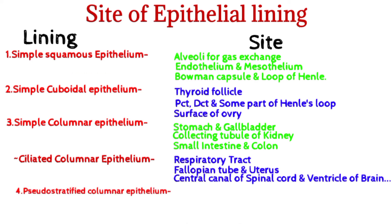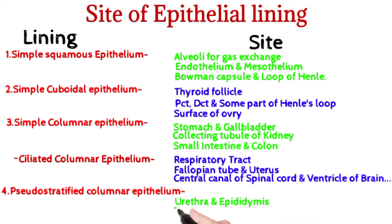Pseudo-stratified columnar epithelium is present in the urethra and epididymis, and is also present in the trachea and Eustachian tube.